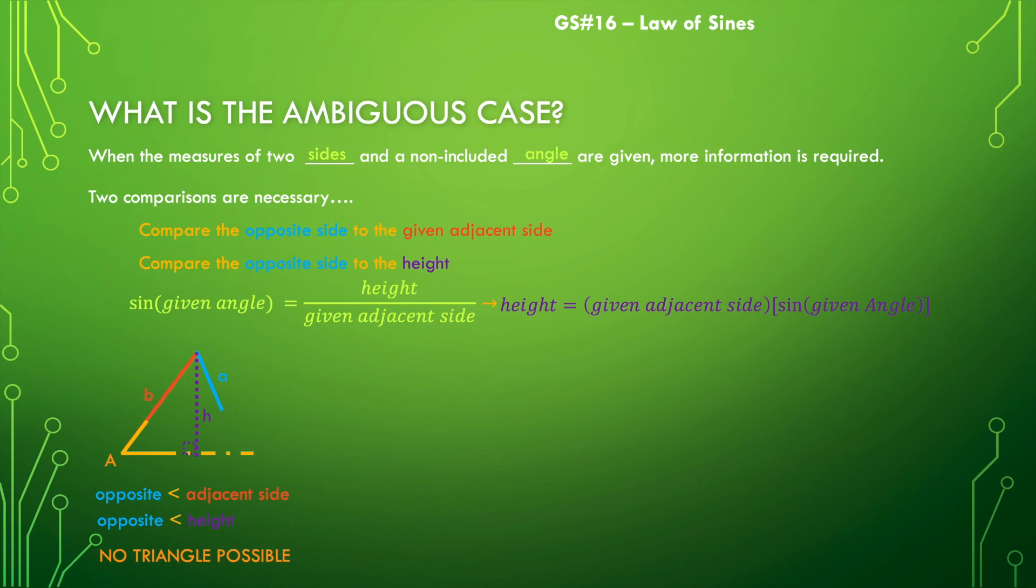The second possibility looks kind of like this. Here's that angle A again and our adjacent side B again. Here is our opposite side, side A. And here's our height. And the length of our opposite side is still shorter than the length of our adjacent side. But the length of the opposite side is exactly the same as the height. And if that's the case, we do have a triangle. And in fact, it's a right triangle.